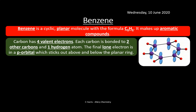Carbon has four valence electrons — the outer electrons. Each carbon is bonded to two carbons and one hydrogen atom, as shown in the diagram. The final electron in the carbon is in a p-orbital, which sticks above and below the planar benzene ring. That accounts for all four valence electrons in the carbon atom.